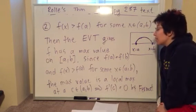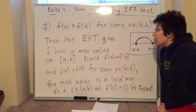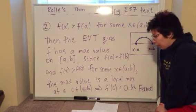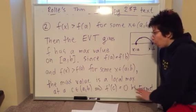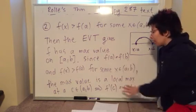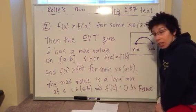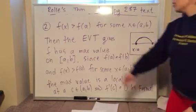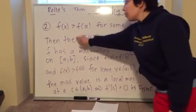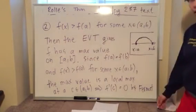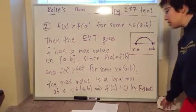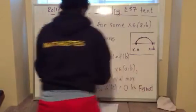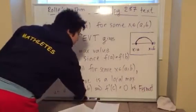That was the hardest part of the proof. If you understand this logic, you're good, and then you can move on to step three, which is kind of the opposite of case two and uses similar reasoning.